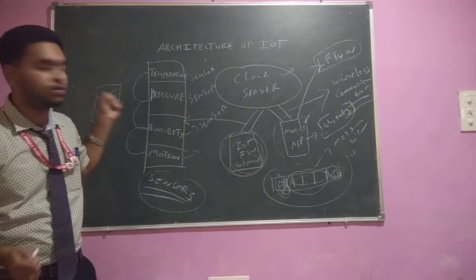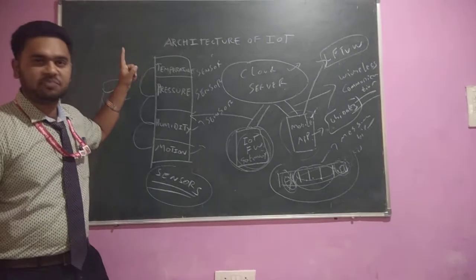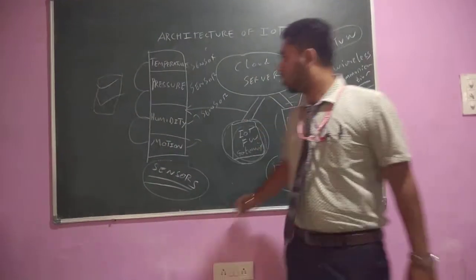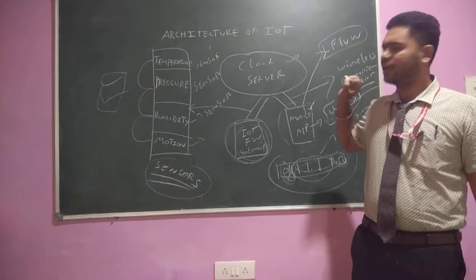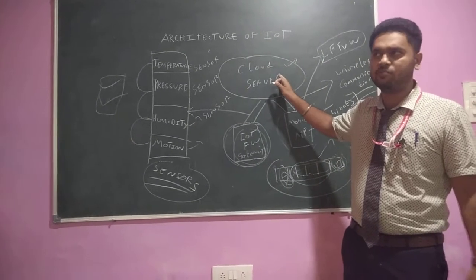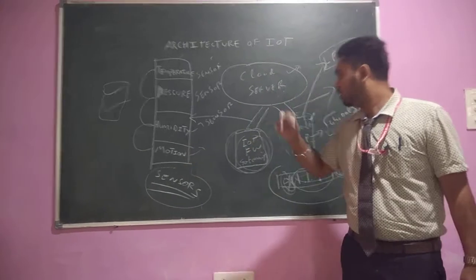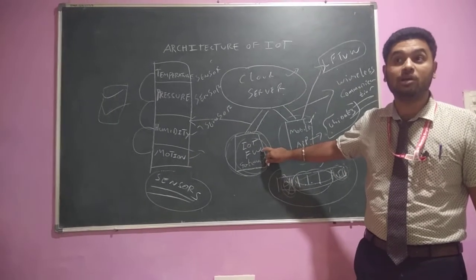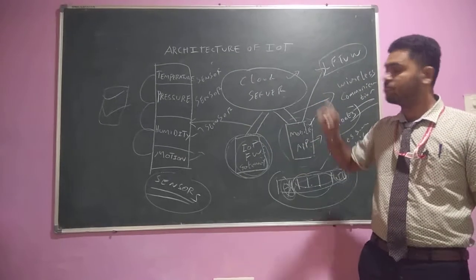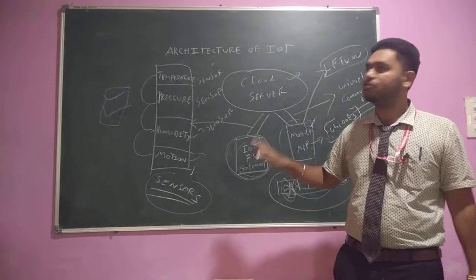Sensors capture input — which may be in the form of temperature, pressure, humidity, or motion — and pass it through the network. This is the complete block diagram of IoT. Remember only four blocks: first, cloud server, which is very important; second, mobile app, through which we use the internet; third, IoT framework and gateway, for data exchange between devices; and fourth, sensors, for capturing input.